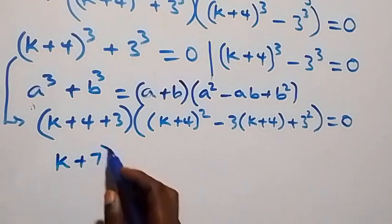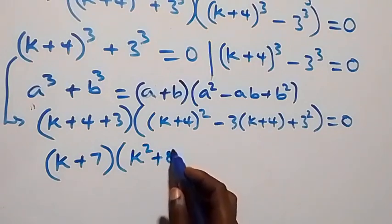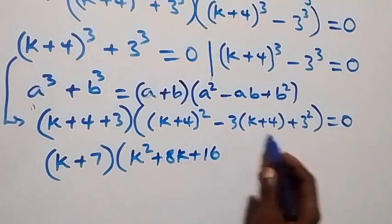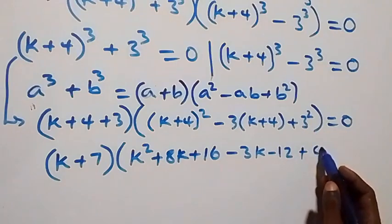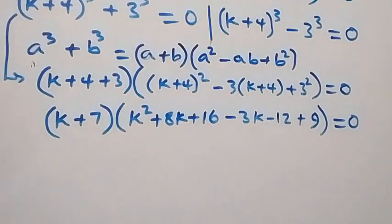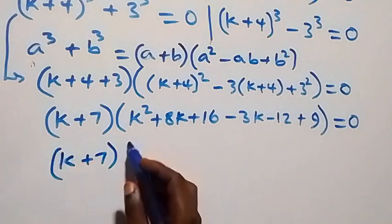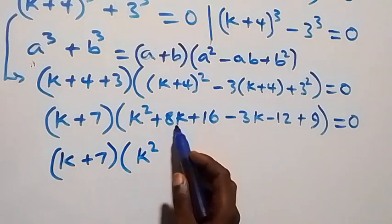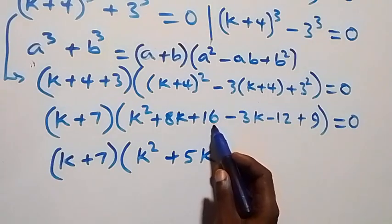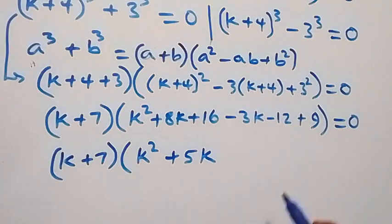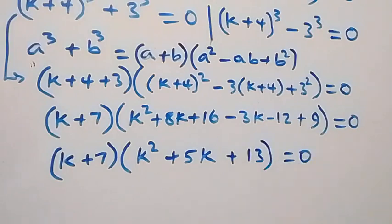That is k plus 7, then into brackets, the expansion gives us k squared plus 8k plus 16, minus 3k minus 12, plus 9, close brackets, equals to zero. Bringing this together we have k plus 7 times k squared plus 5k plus 13 equals to zero.